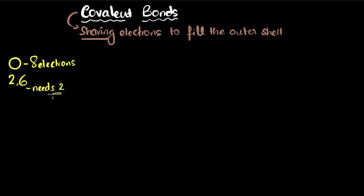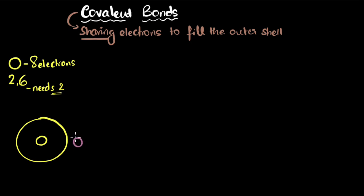How does oxygen get those two electrons? It's going to share two electrons with another oxygen atom. We can draw a dot structure for this: we write the oxygen symbol for one atom, then draw another oxygen next to it. Whatever we draw in the middle will represent shared electrons, and the electrons on the outside are not shared. This first oxygen has six total electrons and can share two, so we draw those two in the middle.